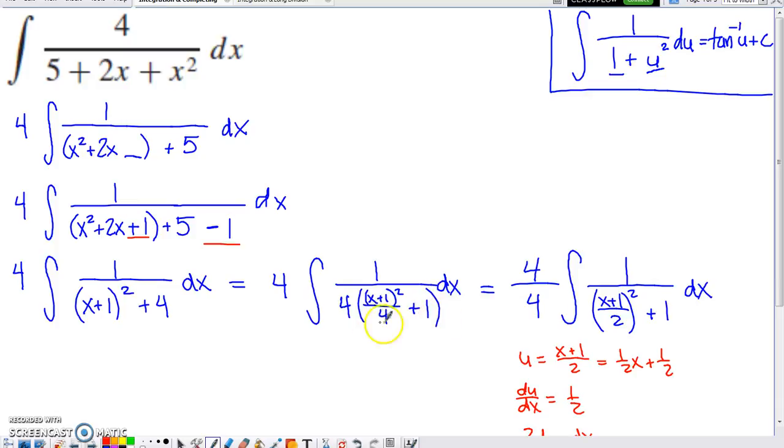So if I distributed this 4 back in, the 4 and the over 4 would cancel on this first term. We'd be left with what we see right here. And then, of course, the 4 distributed into the plus 1 gives us the plus 4 that we see we started with in that second spot. So hopefully you can convince yourself that this expression right here is equivalent to what we see in that denominator there.